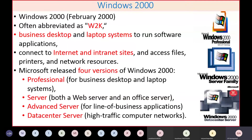Windows 2000, also abbreviated as W2K, was a good OS used for desktop and laptop systems. It could connect to the internet and intranet. It came in four flavors: Windows 2000 Professional for desktop/laptop, Server for web and office servers, Advanced Server for business applications, and Datacenter Server for high-traffic computing networks. Some servers may still be operating on Windows 2000 Server today.